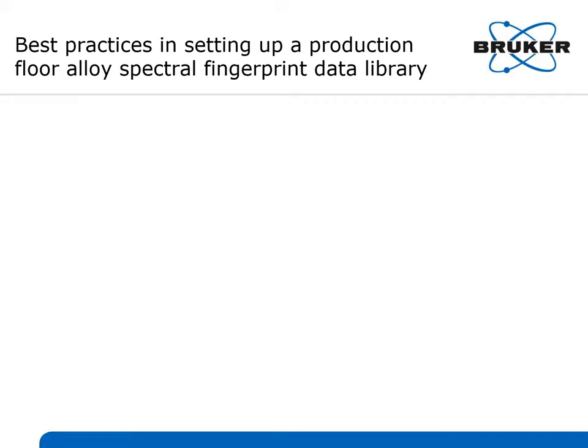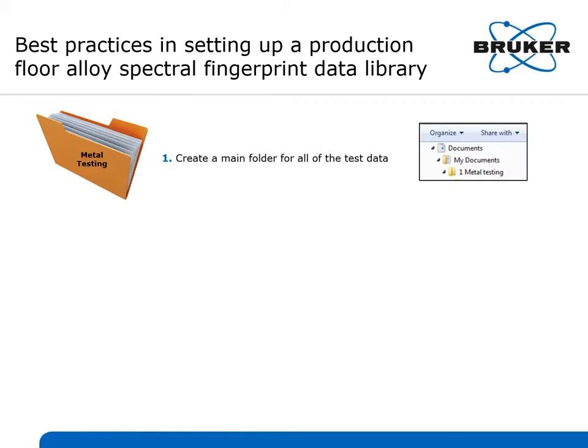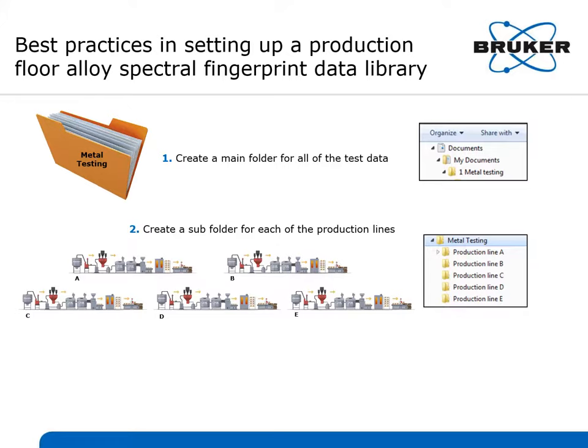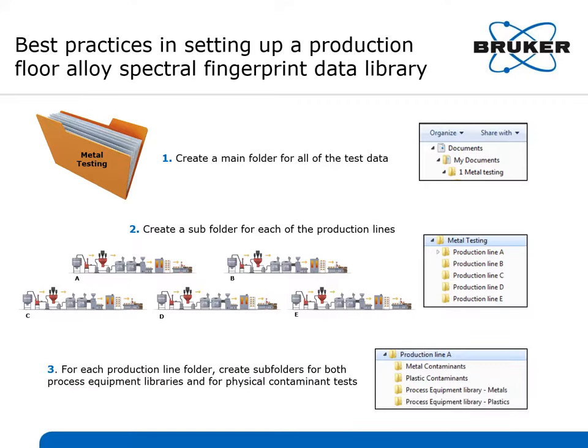Before you start taking tests, you need to set up a spectral fingerprint data library system on a PC. First, in your documents folder, create a main folder for all the test data you will be taking. Next, create a subfolder for each of the production lines on your floor — for instance, if you have five production lines, create a production line folder for each one. Then create subfolders for both process equipment libraries and for physical contaminant tests within each production line folder, covering metal contaminants, plastic contaminants, a metal process equipment library, and a plastic process equipment library.